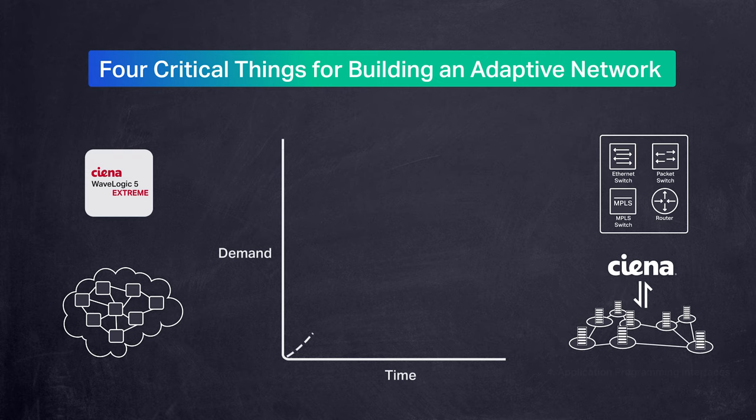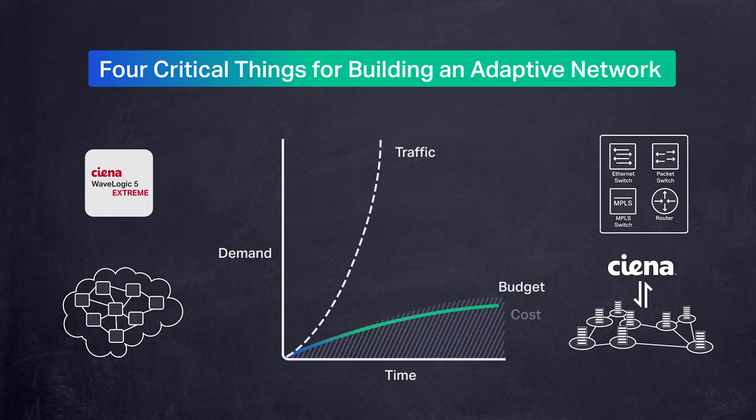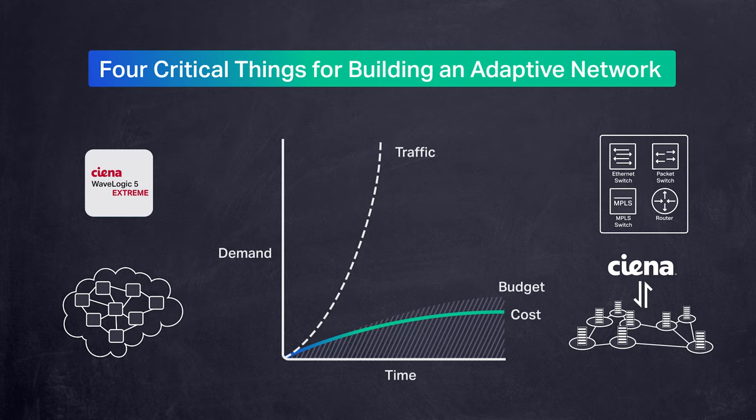If you do these things, you also optimize packet transport versus packet touch. This bends your cost curves down. Your network can grow to be 10 or 100 times more capable while still minimizing cost and complexity.